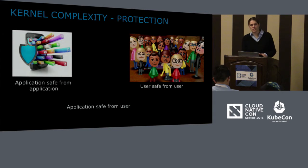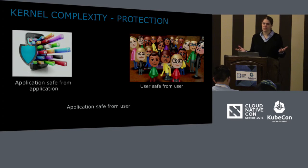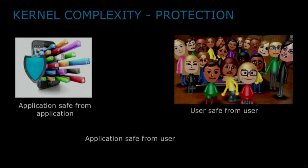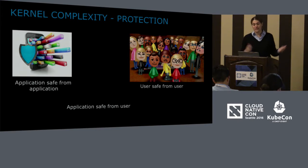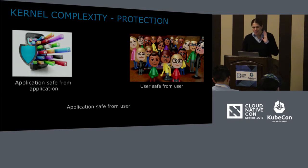When I look at the kernel and try to understand why it's so complicated, one reason is its job is to protect: application from application, user from user, and application from user. That made a lot of sense in the 1950s and 60s — buying a huge mainframe was expensive, you had to share it, so you needed to make sure one application wouldn't delete another's memory.